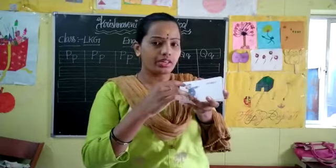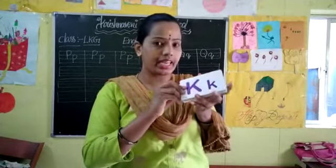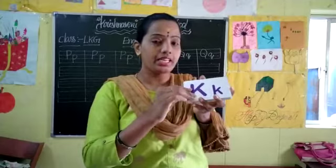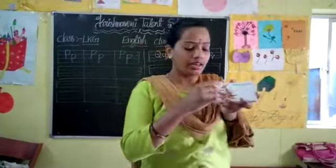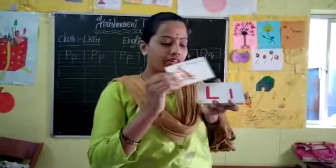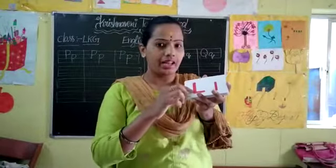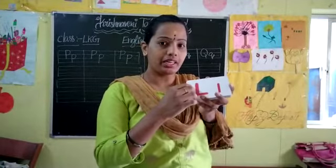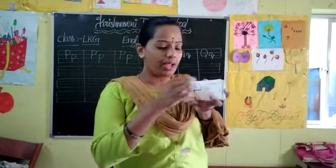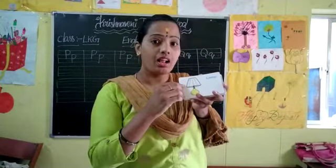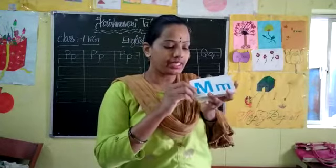And next letter is K. Capital K, small k. K for kangaroo. K for kangaroo. And next letter is L. Capital L, small l. L for lamp. See here, lamp is there. L for lamp.